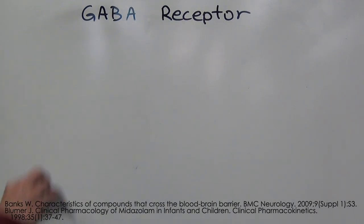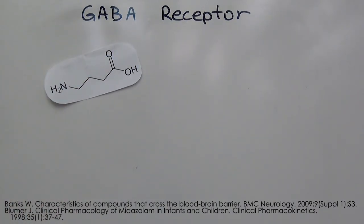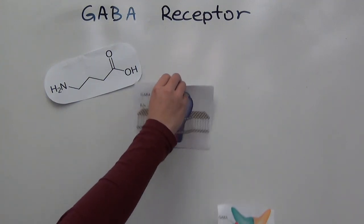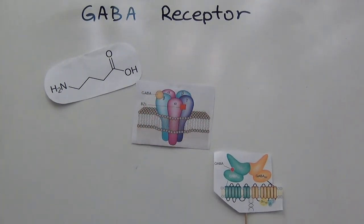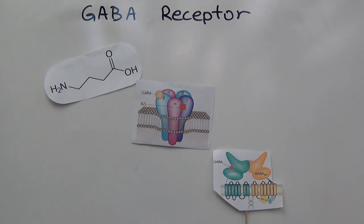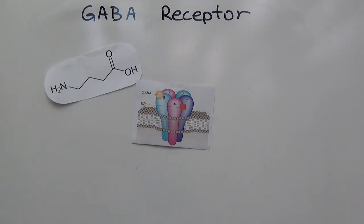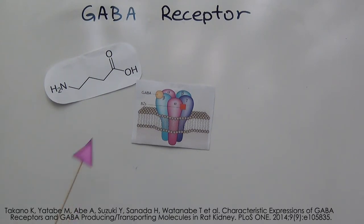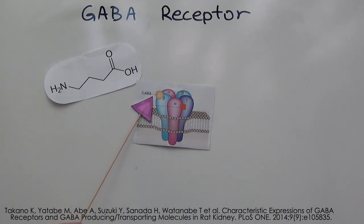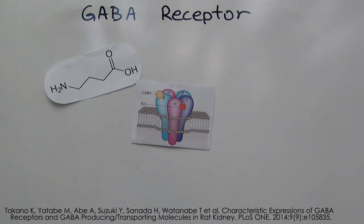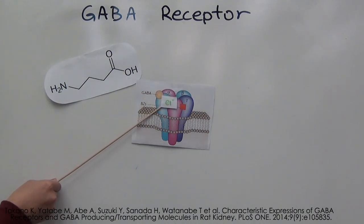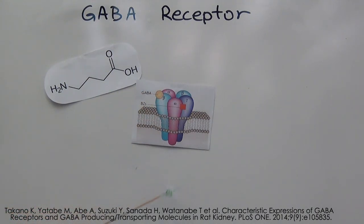Gamma-aminobutyric acid, GABA, is the major inhibitory neurotransmitter in the CNS, acting on GABA receptors. There are two classes of GABA receptors, GABA-A and GABA-B, but as midazolam acts on GABA-A, this is what we will focus on. In normal function, GABA binds to the beta-alpha subunits on the extracellular interface of the GABA-A receptor, a pentameric ligand-gated chloride ion channel. The activated receptor allows an influx of chloride ions, raising thresholds and making it less likely for an action potential to be generated, resulting in a relaxing effect.